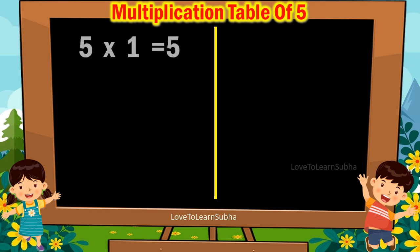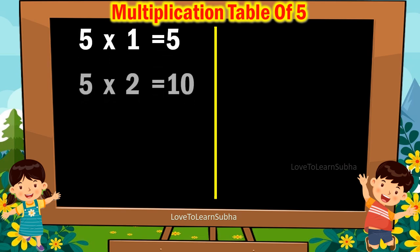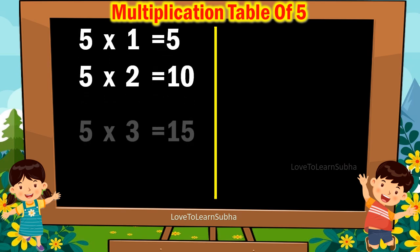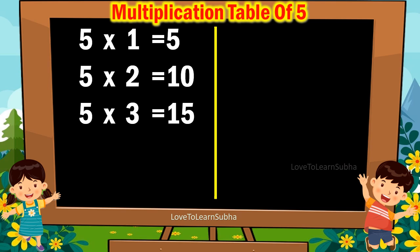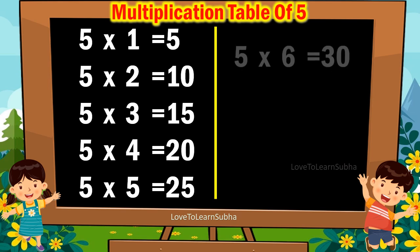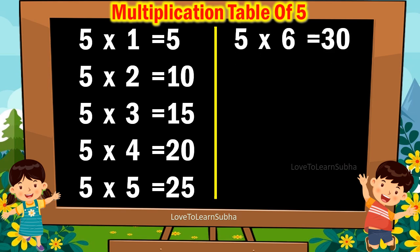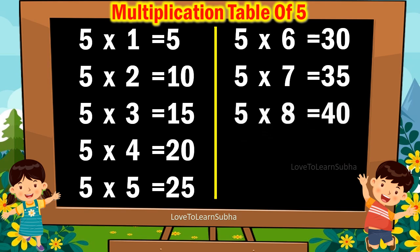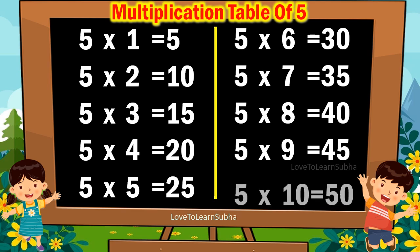5 1s are 5, 5 2s are 10, 5 3s are 15, 5 4s are 20, 5 5s are 25, 5 6s are 30, 5 7s are 35, 5 8s are 40, 5 9s are 45, 5 10s are 50.